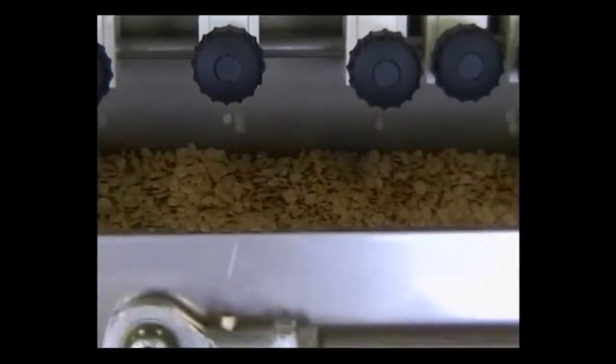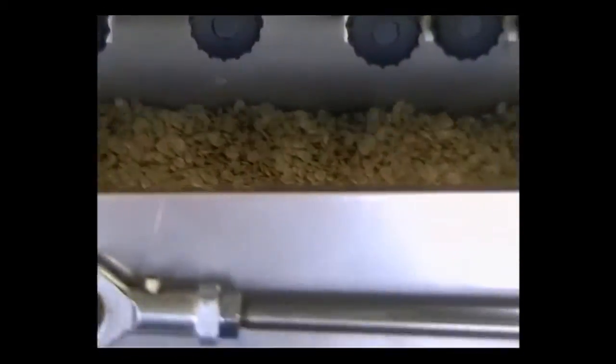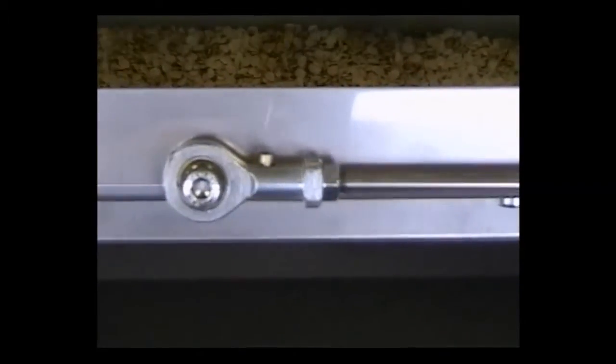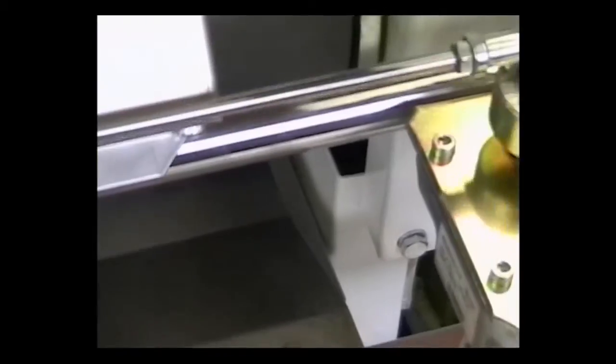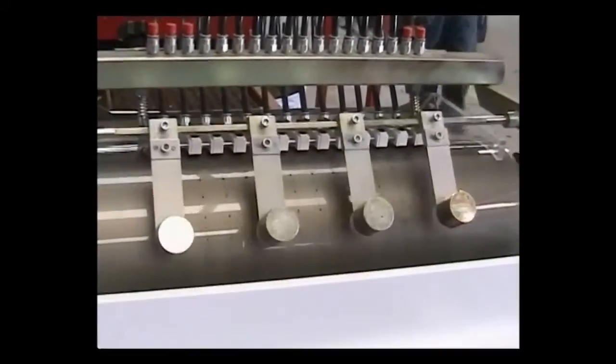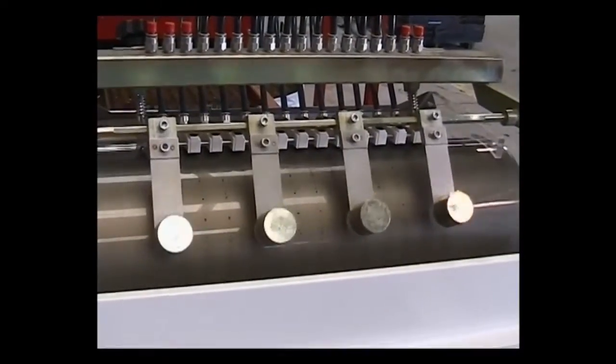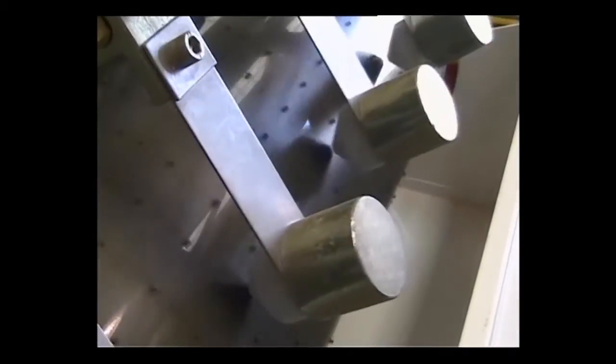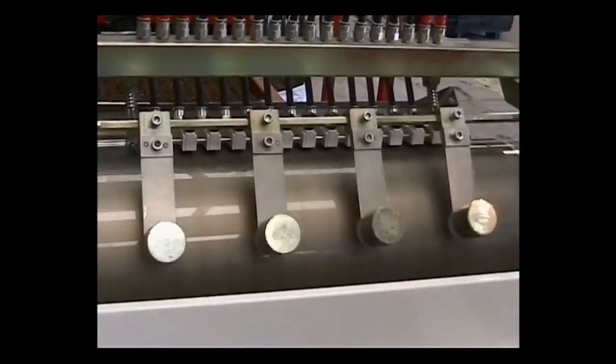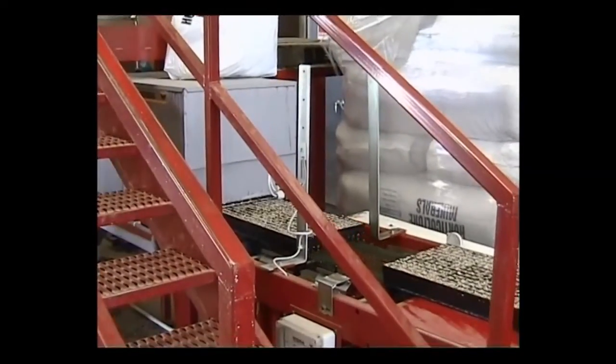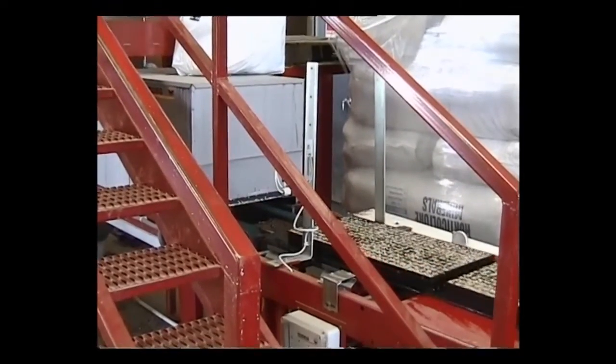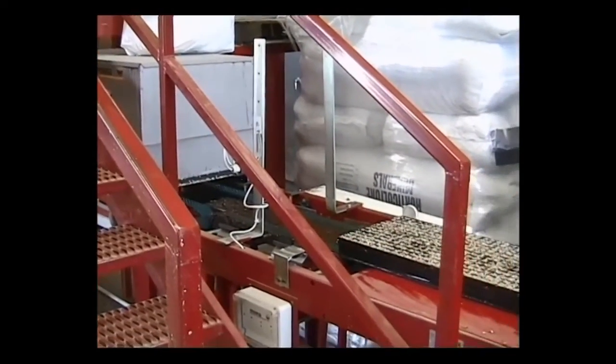Also note that the seed in the hopper is moving side to side for optimal presentation to the nozzles. The nozzles themselves are actually stainless steel inserts into the aluminum drum which gives the most accurate hole size and also maintains the hole size over a long period of time.